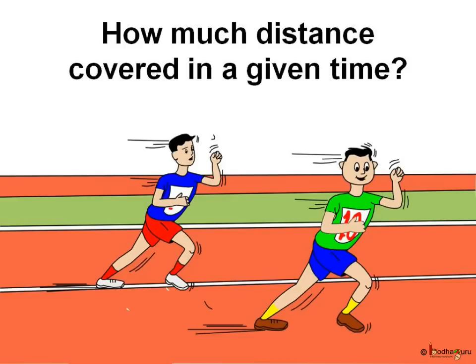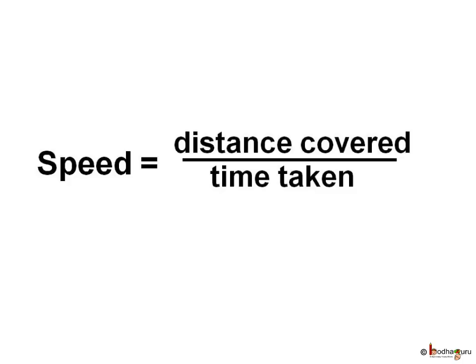For example, when there is a race in your school, there is a start point and an end point. Every child starts the race at the same time, but the winner is the child who covers this distance fastest, i.e., in the least amount of time. The idea of how slow or fast an object is moving is found by the distance it covers in a unit time.